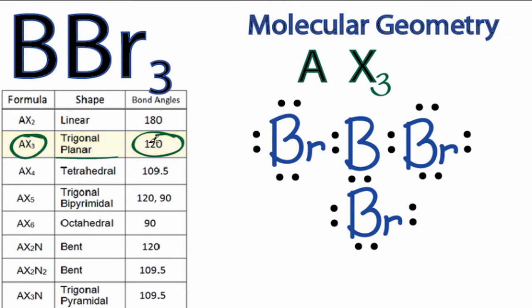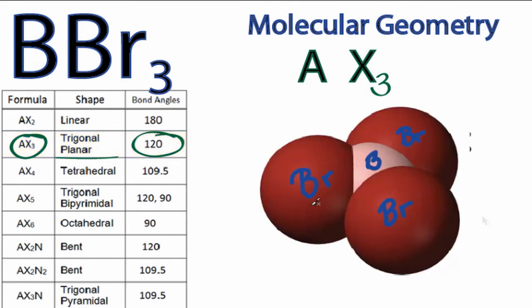If we go back to our three-dimensional structure, we're talking about this bond angle right here - that's 120 degrees. And we also have the same bond angle here, and then this angle over here. So that's the molecular geometry for BBr3. This is Dr. B, thanks for watching.